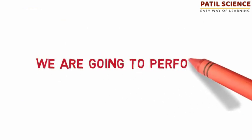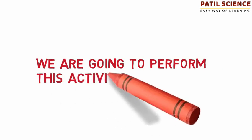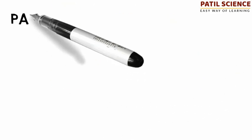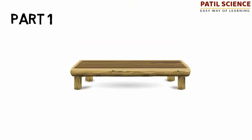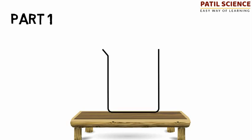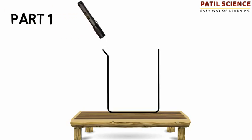We are going to perform this activity in two parts. In part one of the activity, take a table, place an empty container on the table, fix the torch above the container and switch it on. Then observe the path of the light.